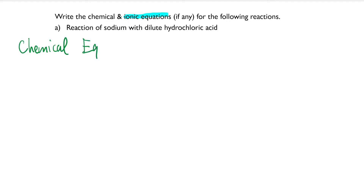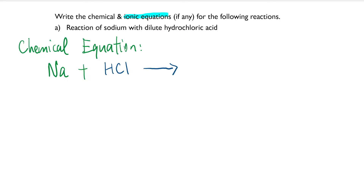So write the chemical equation. In a chemical equation, you will see the whole story. The reaction of sodium metal reacting with dilute hydrochloric acid — so HCl — will form NaCl. You should have learned this reaction in chapter 11, where certain metals react with dilute acids. This will also form hydrogen gas, H₂.